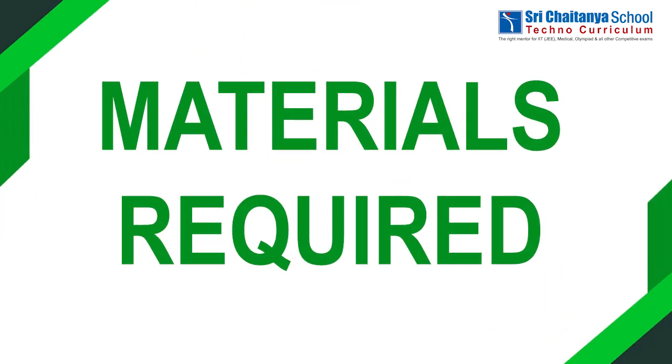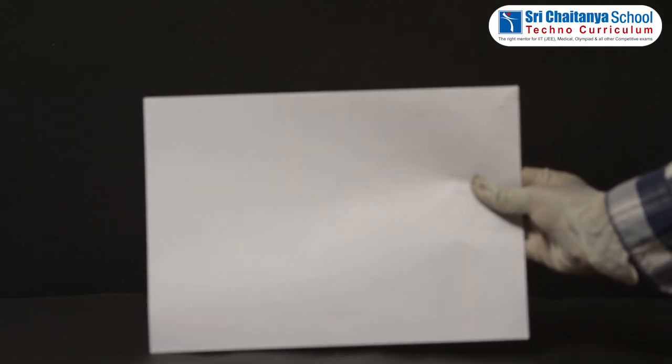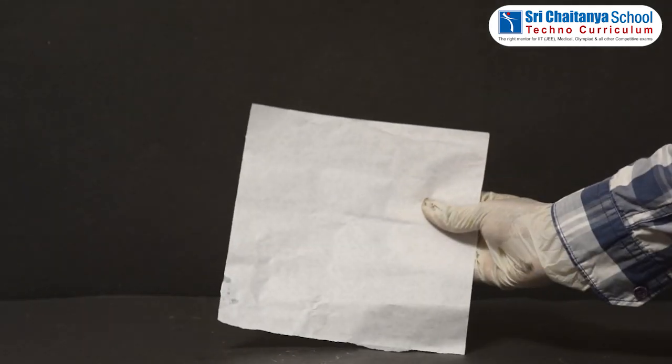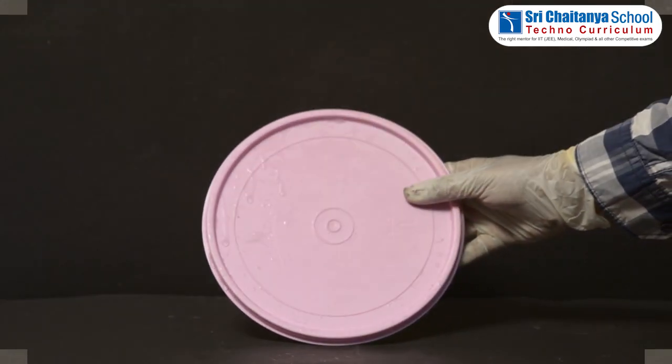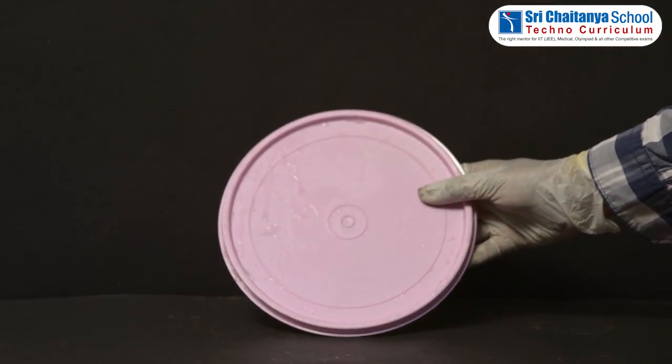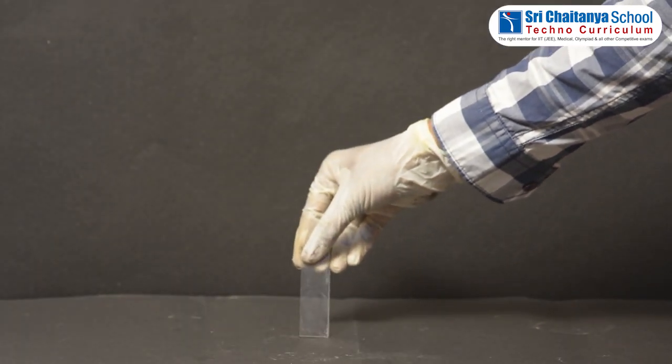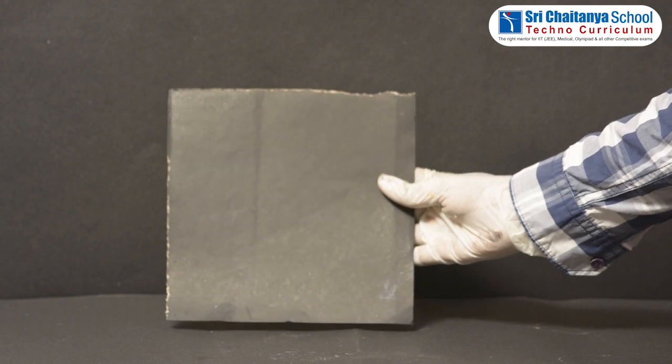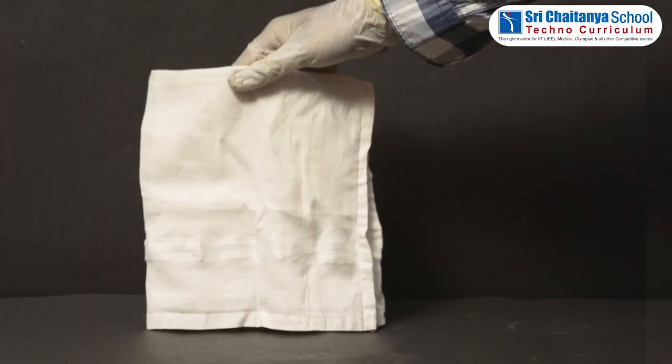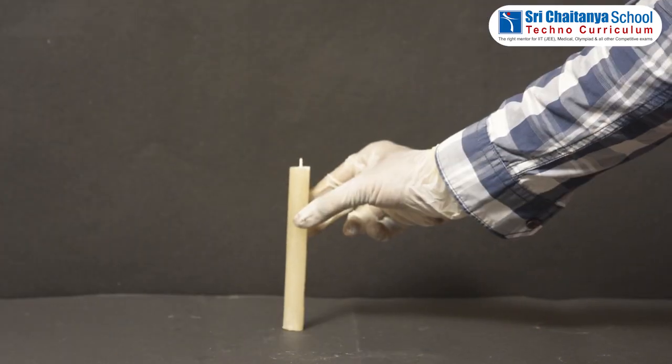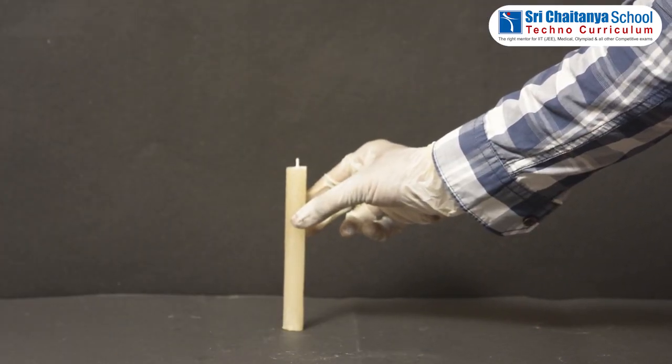The materials required are a sheet of paper, butter paper, tracing paper, wooden sheet, colored plastic sheet, a glass pane or a glass slide, cardboard sheet, aluminum sheet, tissue paper, and a handkerchief, and a lighted candle or bulb.